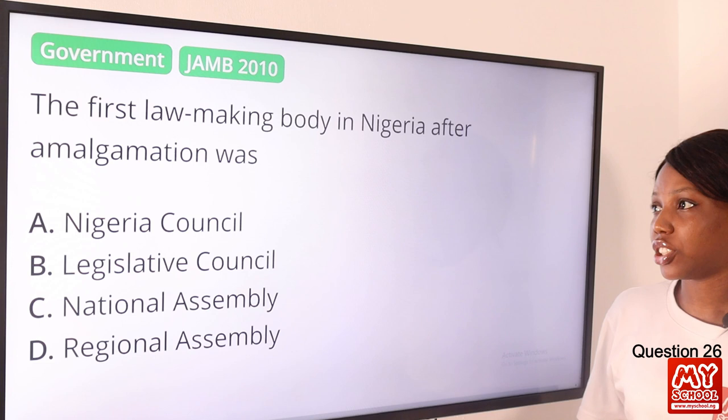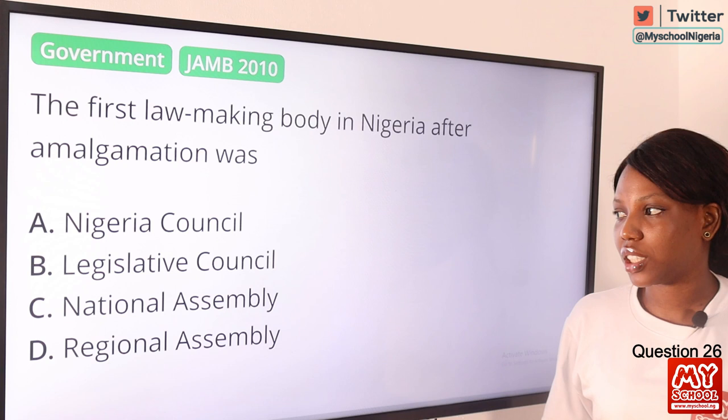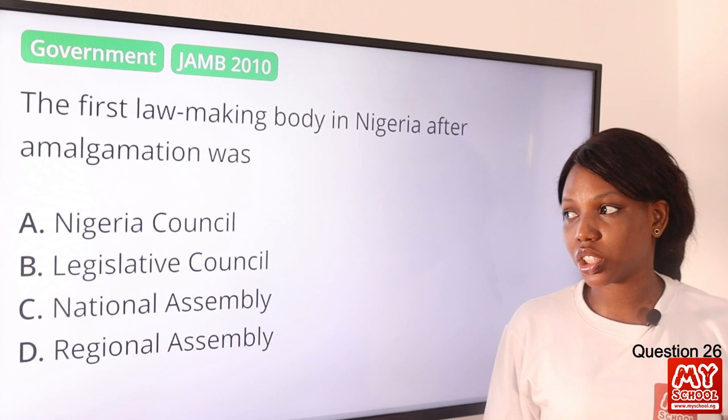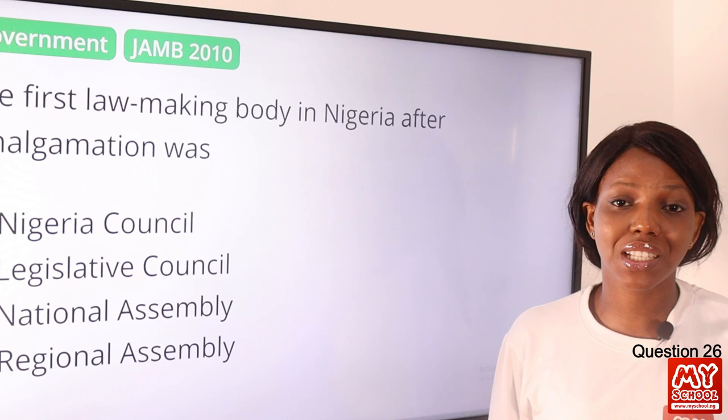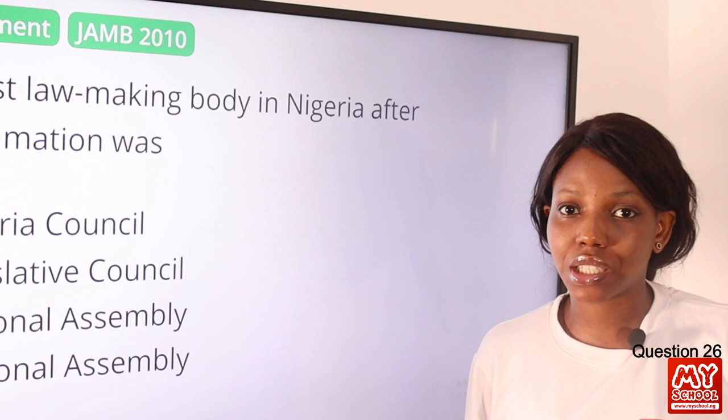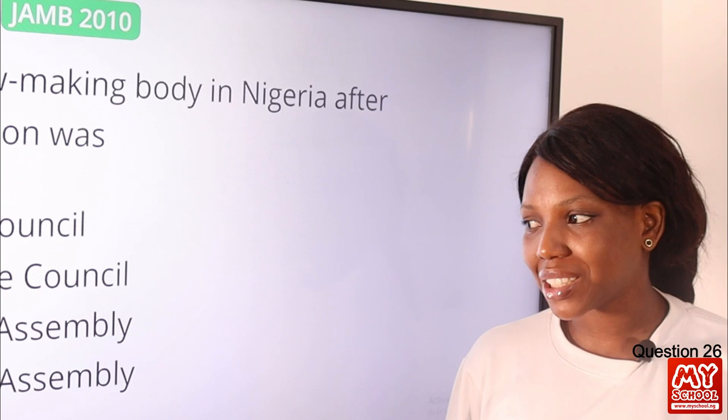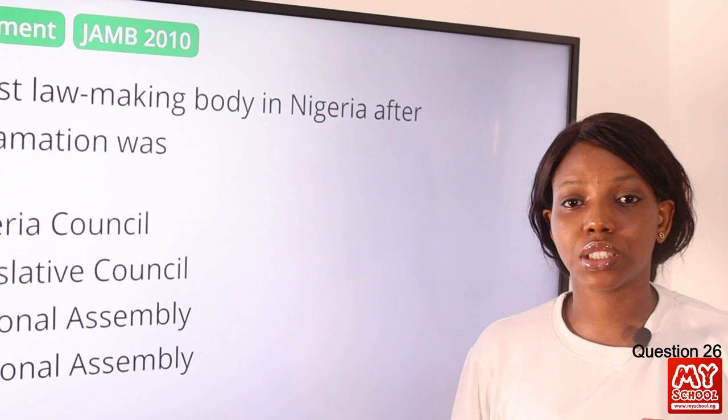Question 26. The first law-making body in Nigeria after amalgamation was: A, Nigerian Council; B, Legislative Council; C, National Assembly; D, Regional Assembly. The answer is option A, Nigerian Council. After the amalgamation of 1914 by Lord Lugard, which united the Northern and Southern Protectorates, the law-making body was called the Nigerian Council. Today we use the National Assembly, but after amalgamation it was the Nigerian Council.